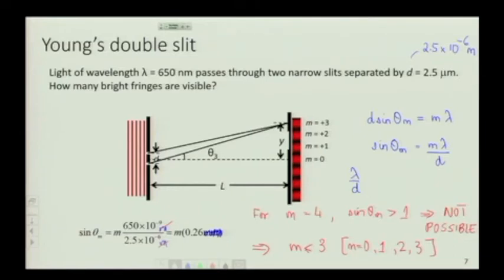So basically what I am going to see is M equals 0, 1, 2, 3. So I am going to see, aside from the central bright fringe, I am going to see 1 on top, 2, 3 on one side, 1, 2, 3 on the other side. I will only see a limited number of bright fringes. Does that make sense to everybody?